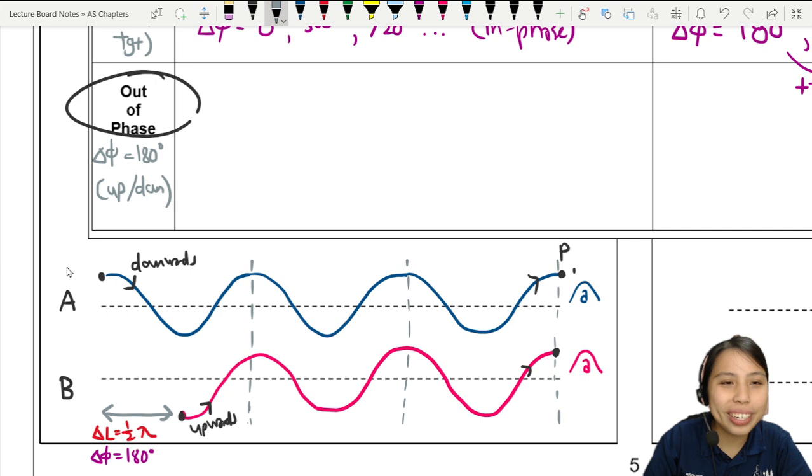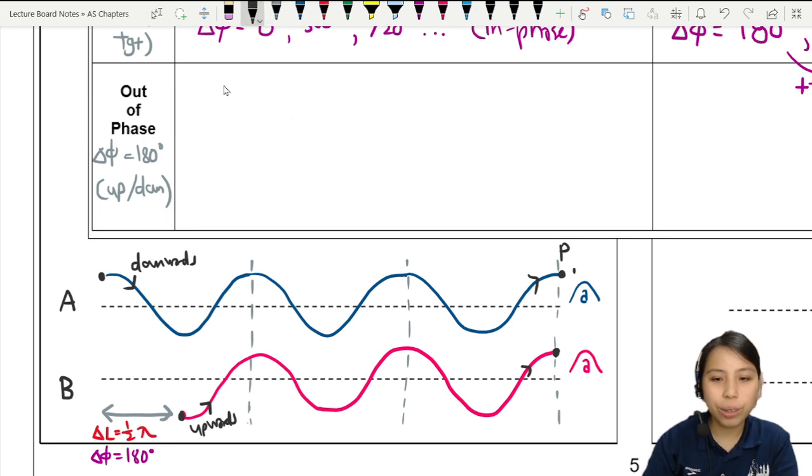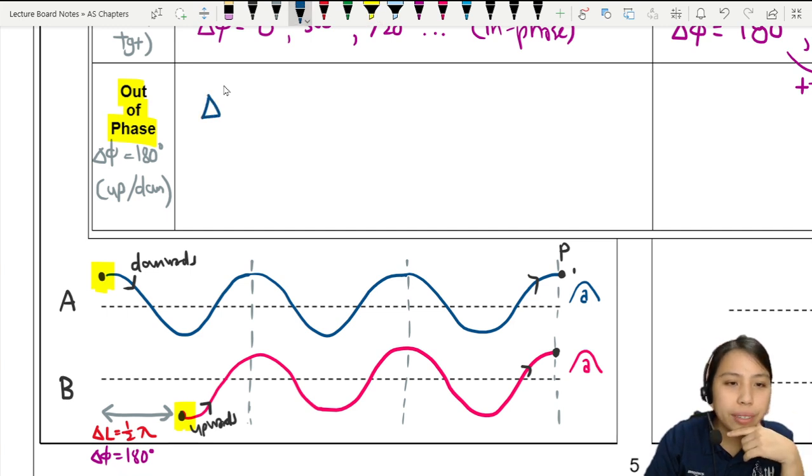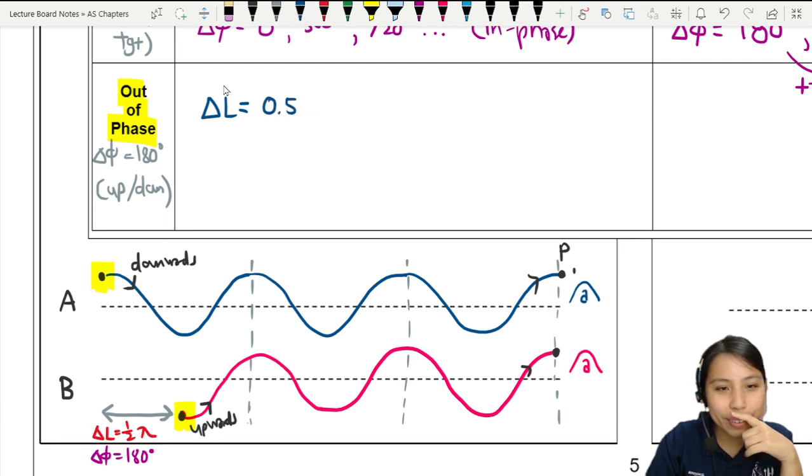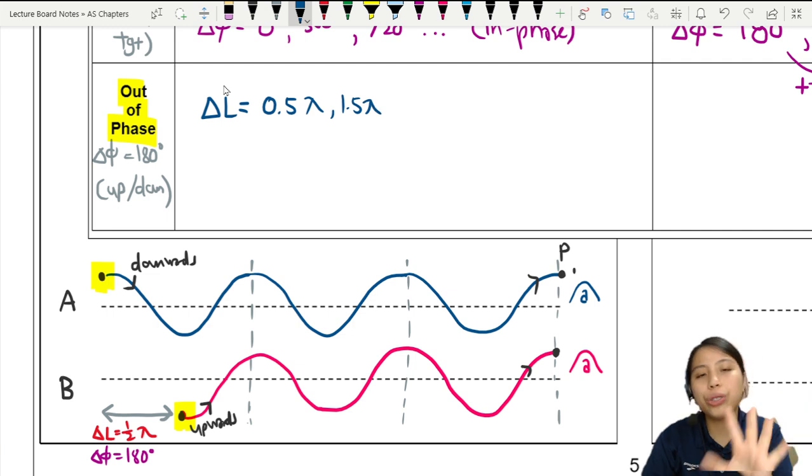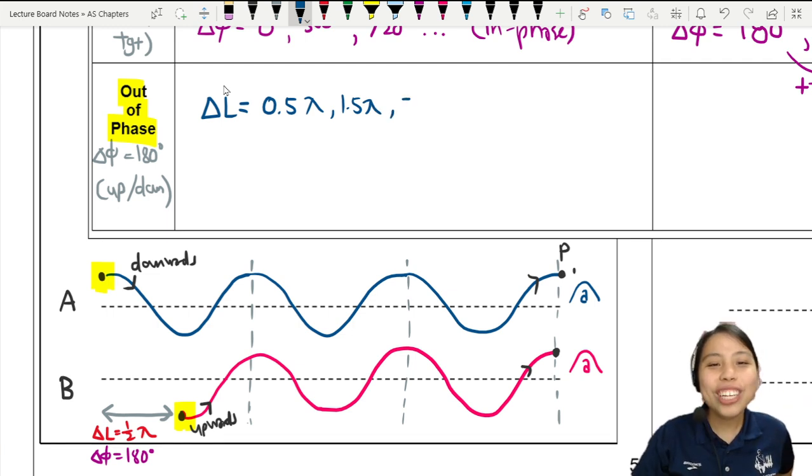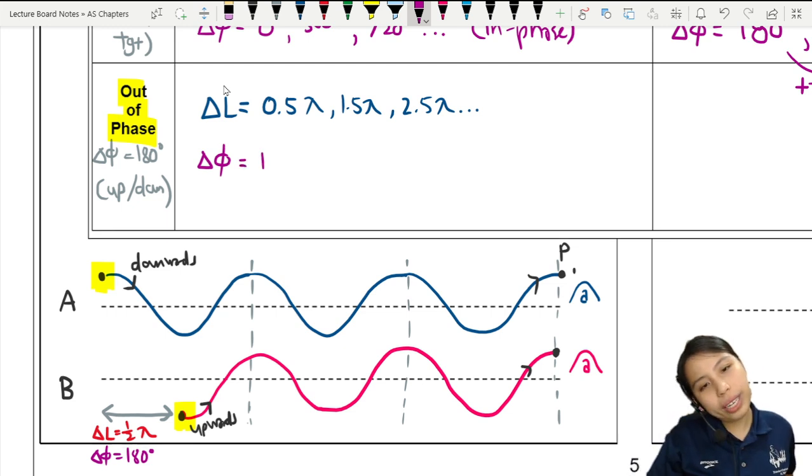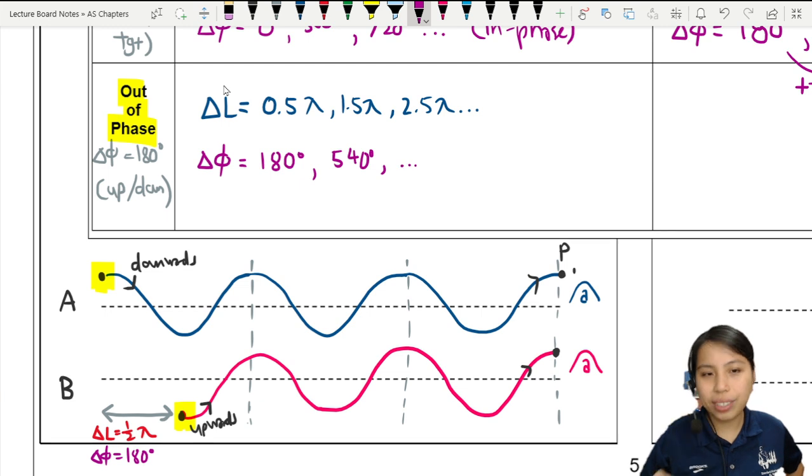So now let's summarize our findings here. Now, if you want constructive interference at point P, if your source is out of phase, then our path difference have to be multiples of 0.5. Oh, 0.5 of a wavelength. 1.5 of a wavelength, you can try to draw many things, but we're going to draw only one scenario here. Okay. 2.5 and so on and so forth. Whereas the phase difference. It's a multiple of 180. So 180, then you add 360, it becomes 540 and so on and so forth.